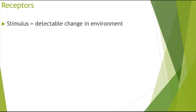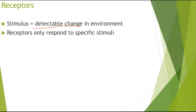First, looking at the definition of a stimulus. A stimulus is a detectable change in the environment. There are a number of changes that could happen — for example, a pressure change, or it could be a change in light intensity. Receptors would only respond to specific stimuli, so there are different receptors for different stimuli. For example, for light you have photoreceptors, for pressure changes we have baroreceptors, and for chemical changes we have chemoreceptors.